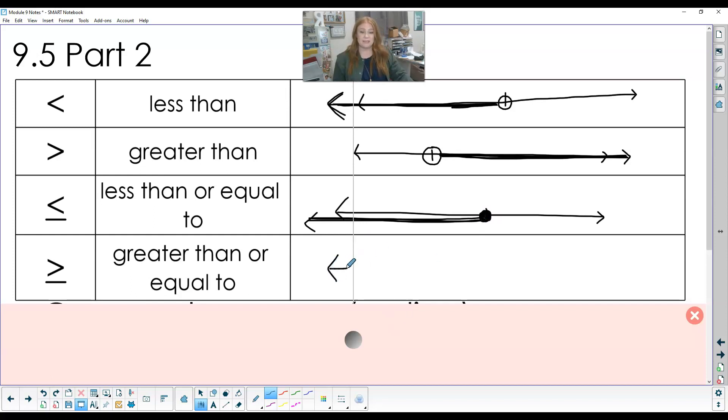So greater than is going to be same, but going the other way. So I find the number it could be greater than, and I circle it, but because it could be equal to it, I include that number. I wrap it up in there, include that number. So it's greater than or equal to this number because I wrapped it up and then my arrow will say it has to be greater than. So it goes that direction.